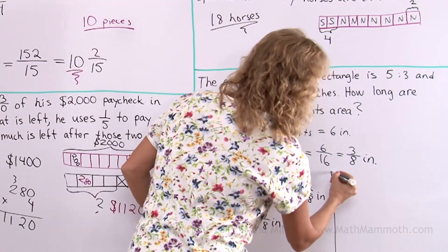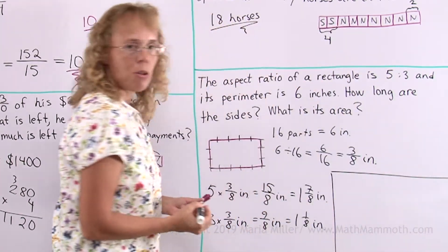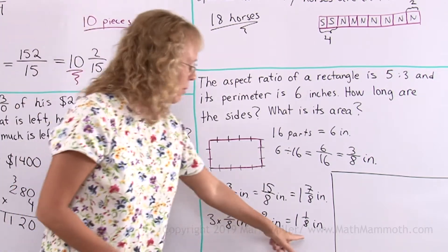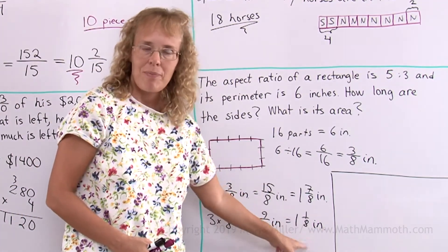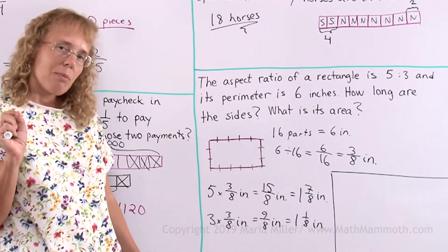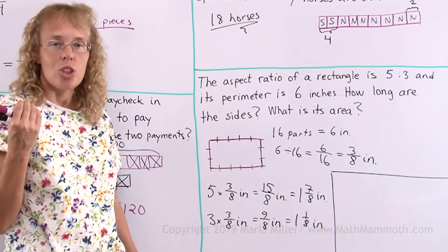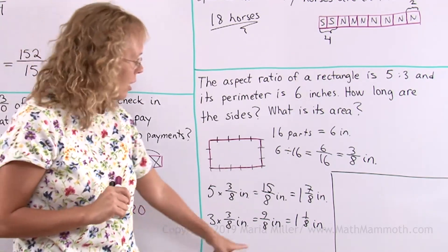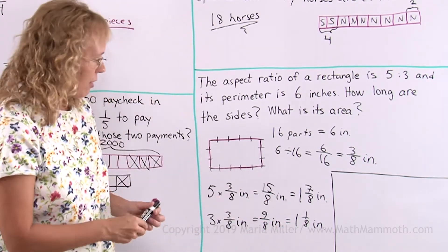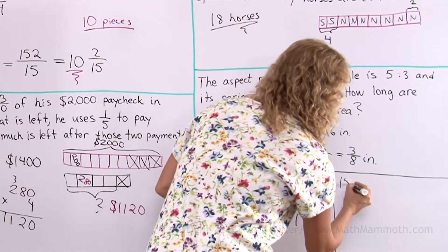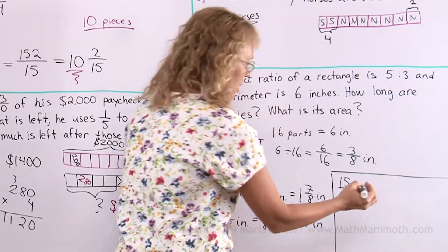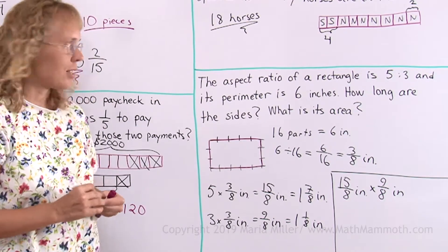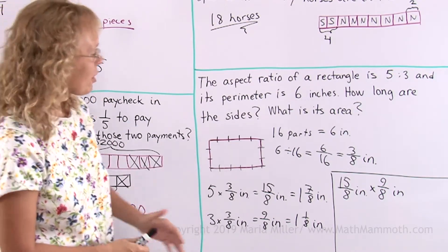The last thing it was asking was the area. I told you already that to find the area of a rectangle, you just multiply this times this. So we multiply those two mixed numbers. But to multiply mixed numbers, in order to use the shortcut for fraction multiplication, I need to have fractions, not mixed numbers. So let me just grab this and this instead. 15 eighths and then times 9 eighths. So I can now use the shortcut instead of having to change them back to those.